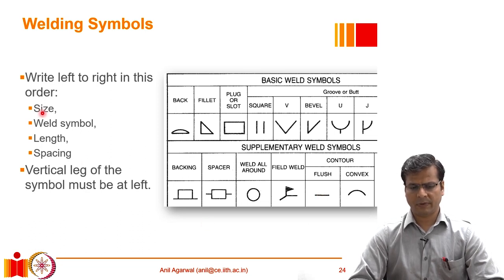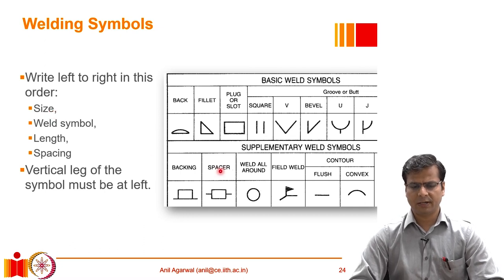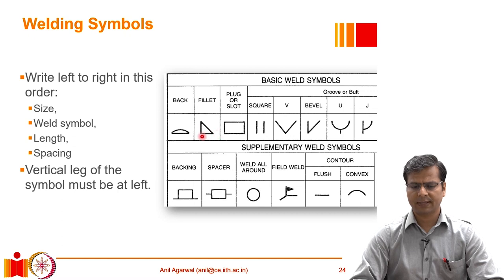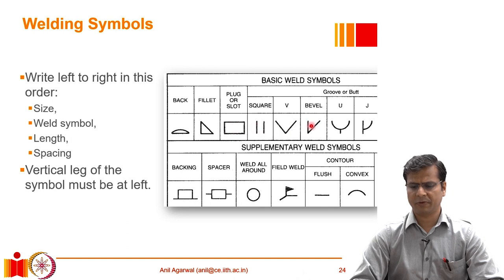When marking weld dimensions on the arrow, details must appear in order from left to right. First, the size of the weld is mentioned — for a fillet weld, this is the leg size. If both legs are equal, one number is written; if different sizes, it is written as a × b. Then, to the right, the weld symbol is shown — whether fillet, square, V, etc.